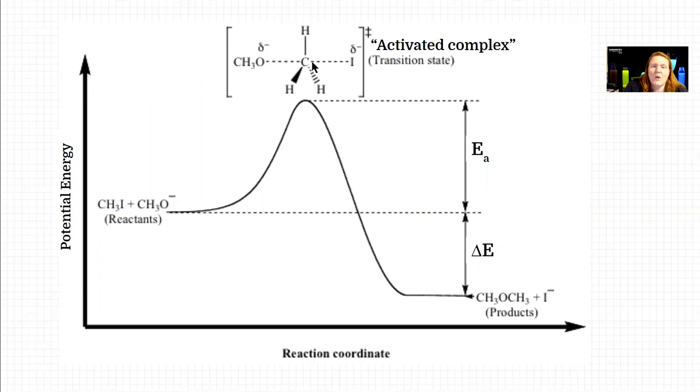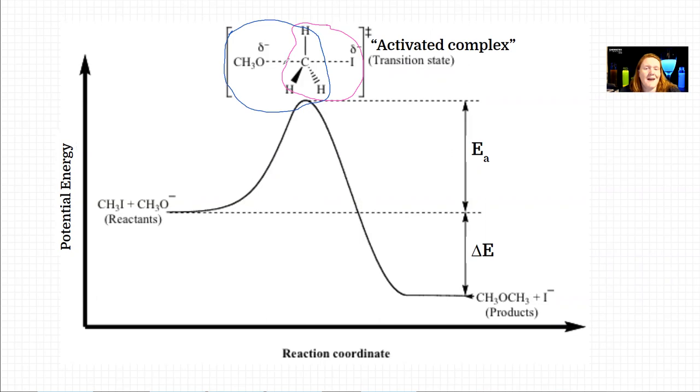That top of the hill has a name. One is called the activated complex, and the other is transition state. They mean the same thing. It's just this kind of transition between the reactants and the product. Our reactant here is CH3I. These dotted lines represent bonds that are breaking and forming, and they don't actually happen simultaneously most of the time. Typically, one of them is harder to do than the other.